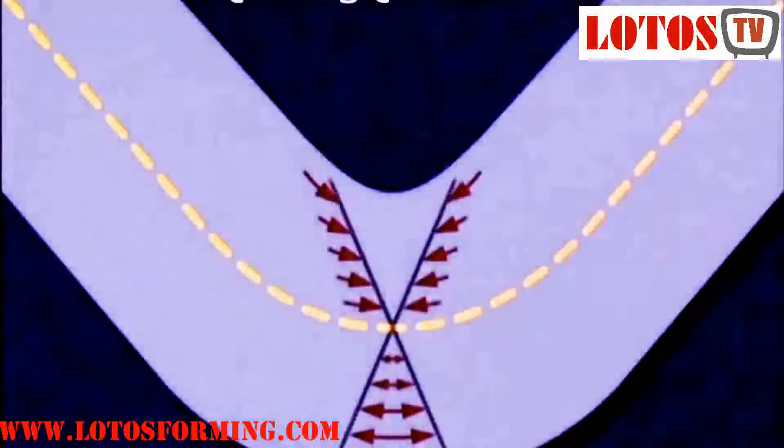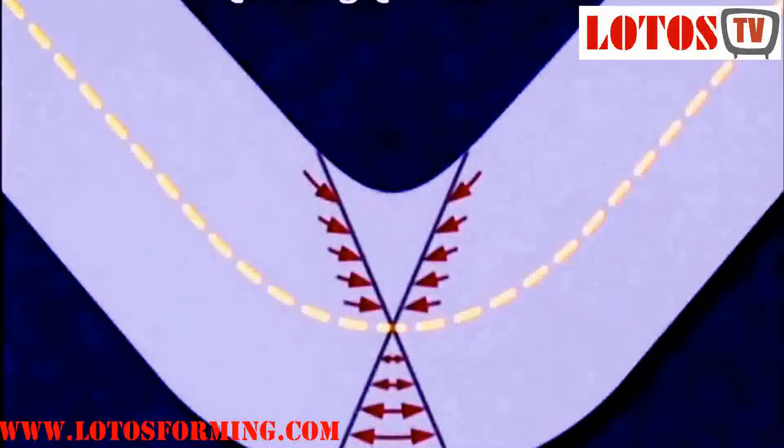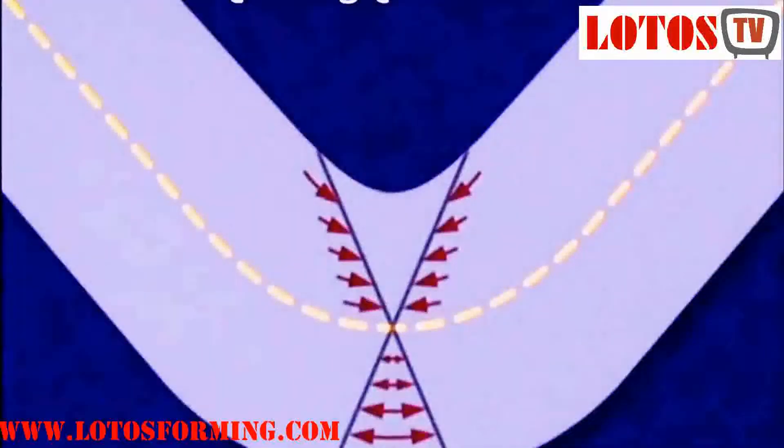Cold rolling accounts for by far the greatest tonnage of cold work products. Sheets, strip, bars, and rods are cold rolled to obtain products that have smooth surfaces and accurate dimensions.